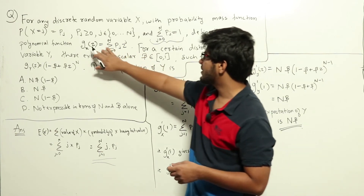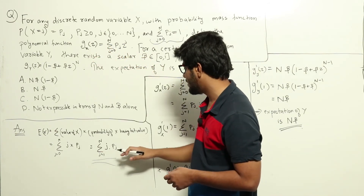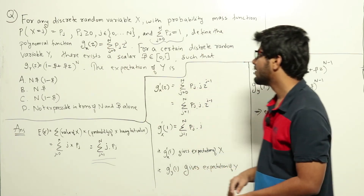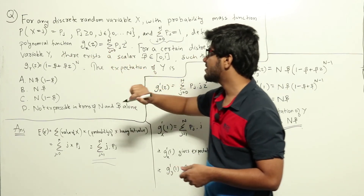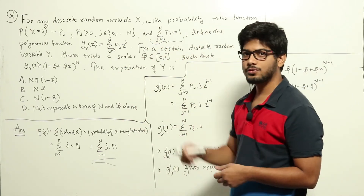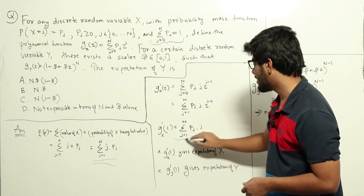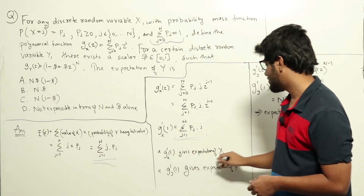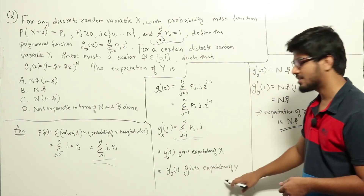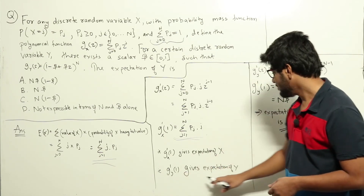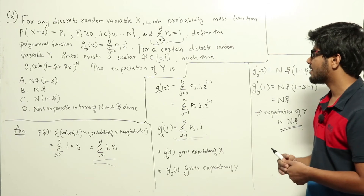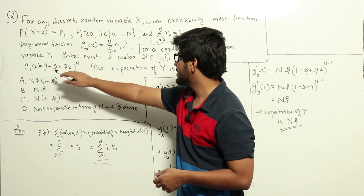So g'_x(1) equals sigma from j=1 to n of j * p(j), which is exactly the expectation of x. By taking the derivative of the polynomial function and setting z=1, we get the expected value. So g'_x(1) gives the expectation of x. Similarly, g'_y(1) will give the expectation of y.